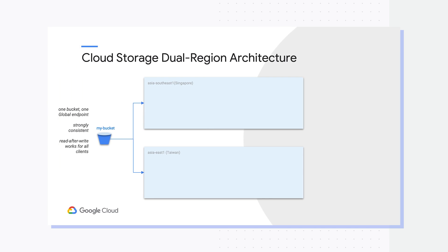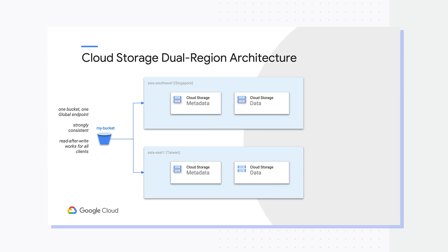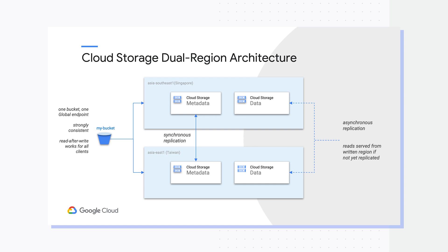For end users, the data is strongly consistent, and for all clients, read-after-write works just out of the box — a pretty big deal for such a massively distributed storage system. The way cloud storage handles metadata and data is different. Metadata is always synchronously replicated, so 100% of the time, metadata is the same across both regions. Data, on the other hand, is asynchronously replicated. Customers have two choices: either stick with default replication, which is designed to provide geo-redundancy for 99.9% of newly written objects within a target of one hour — newly written objects include uploads, rewrites, copies, and compositions.